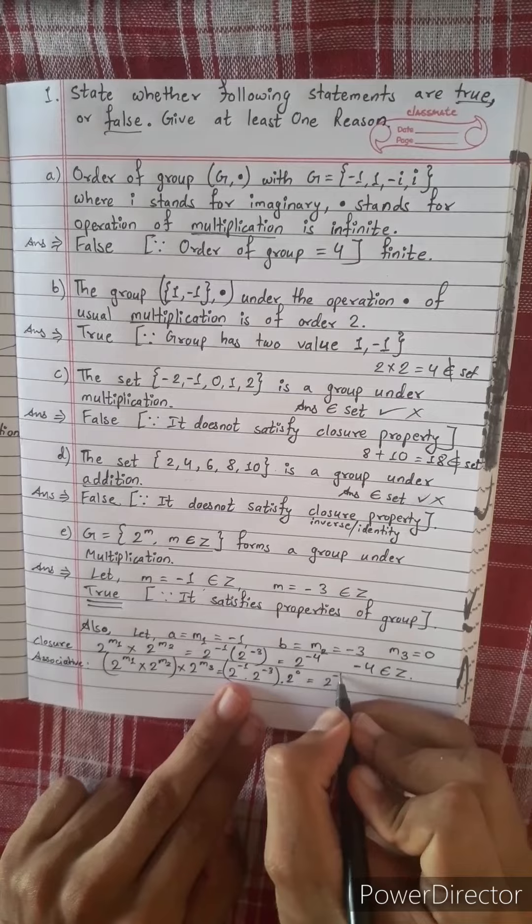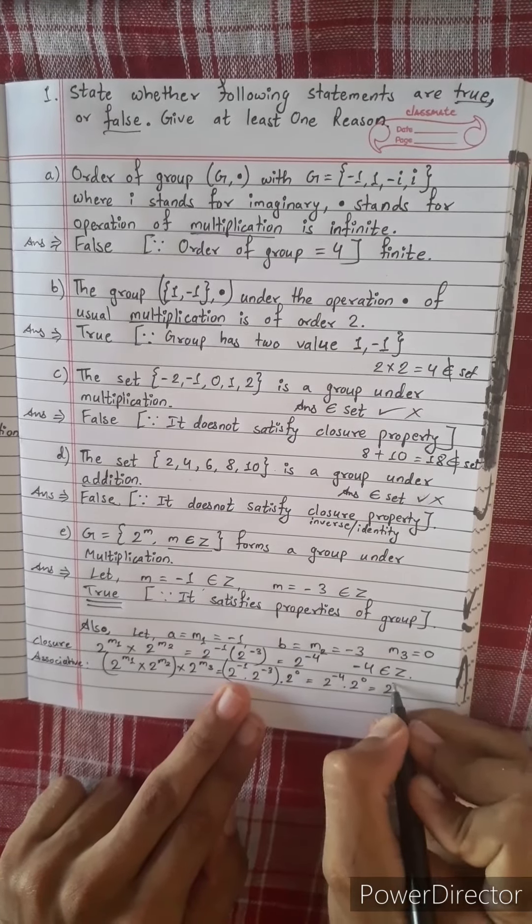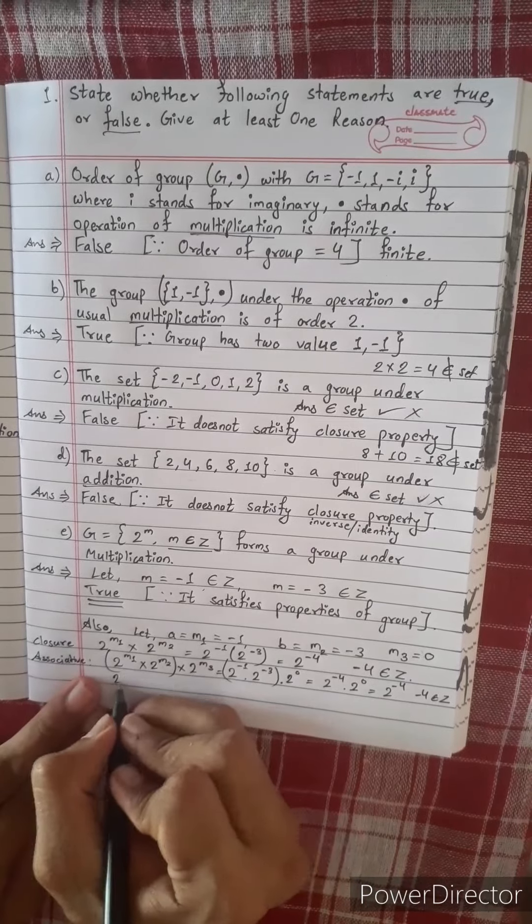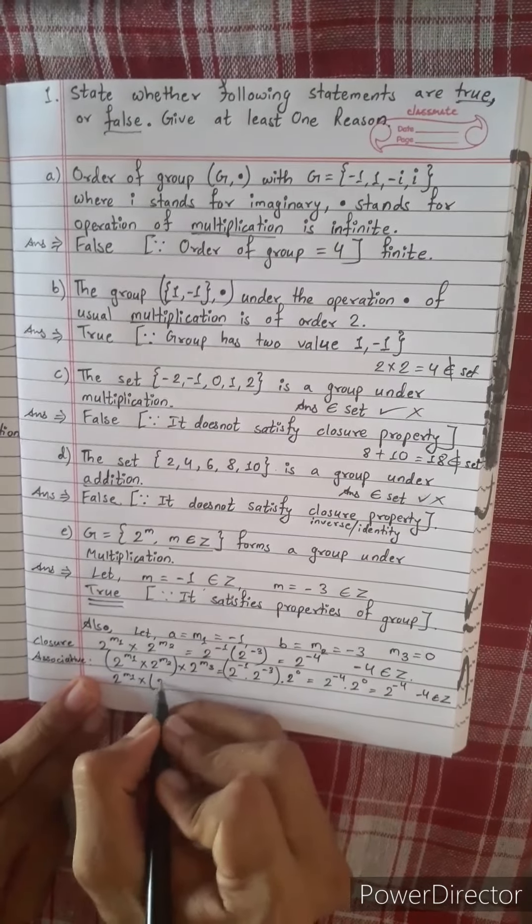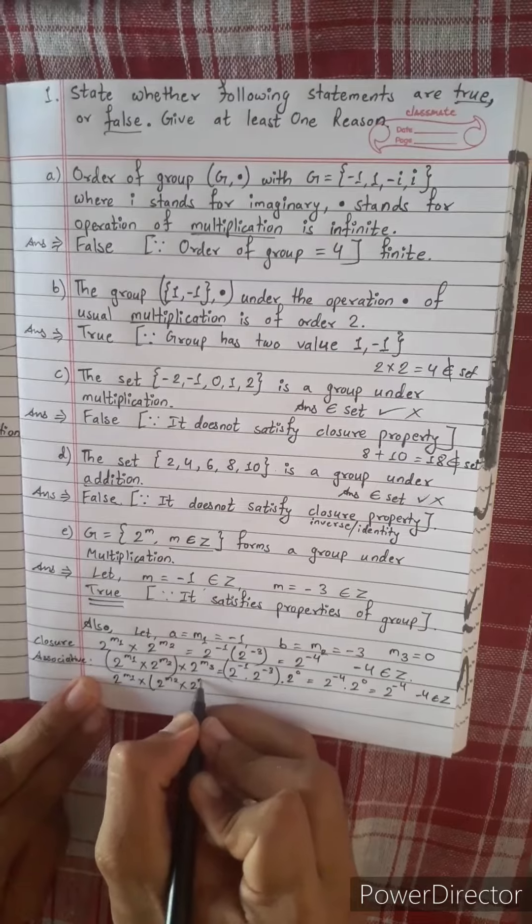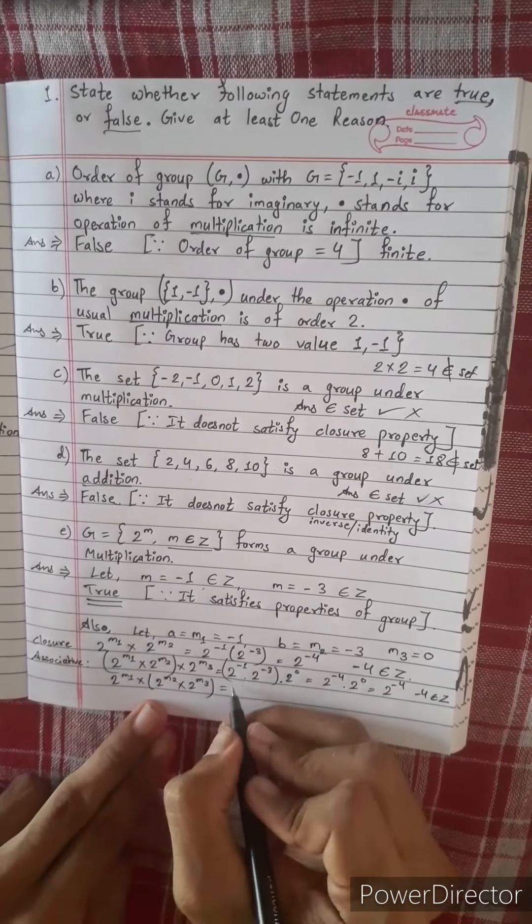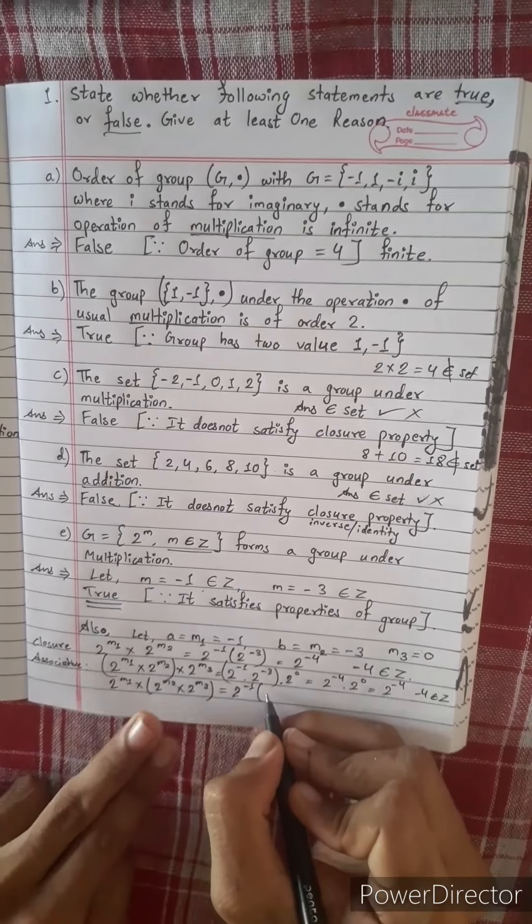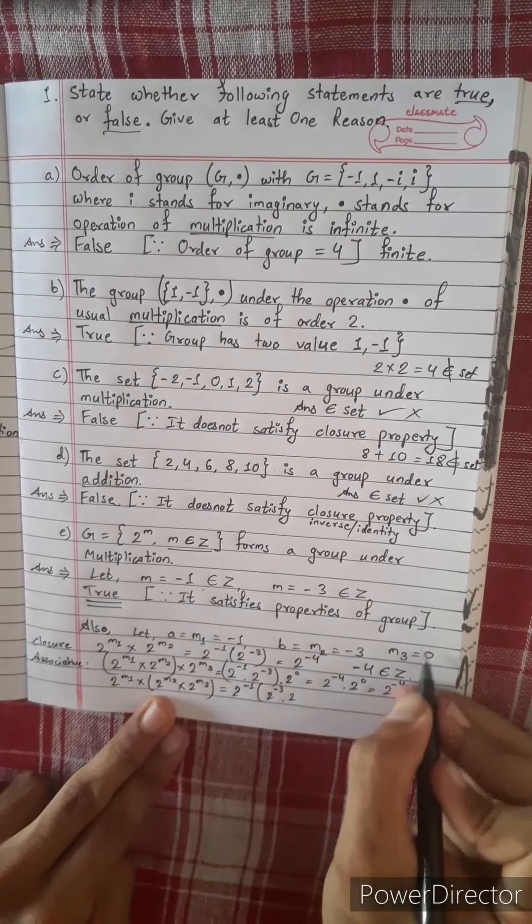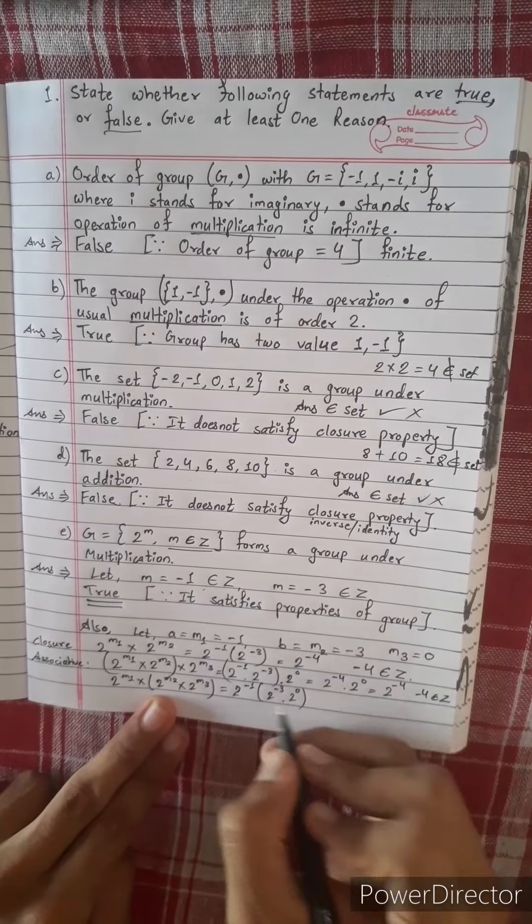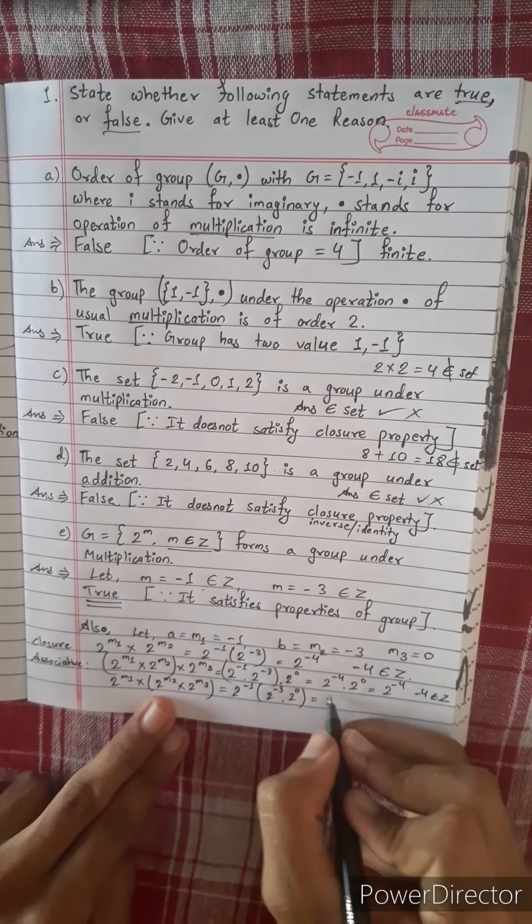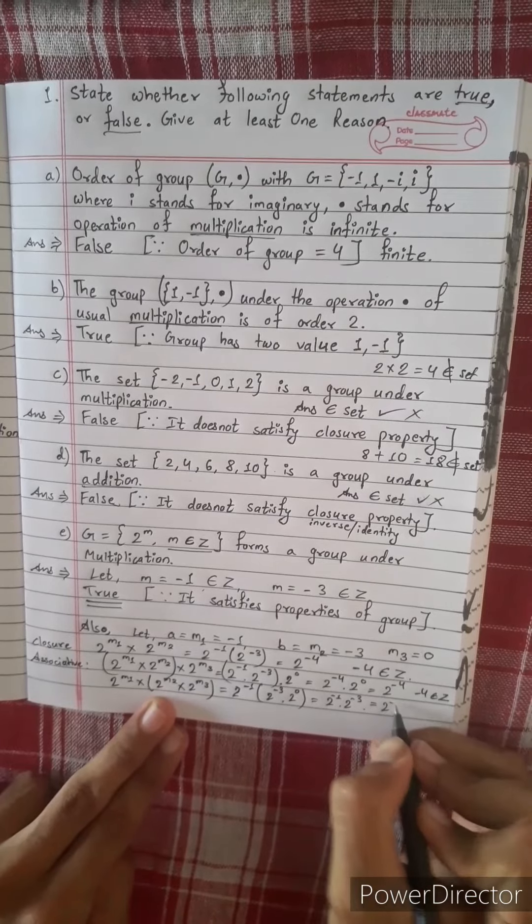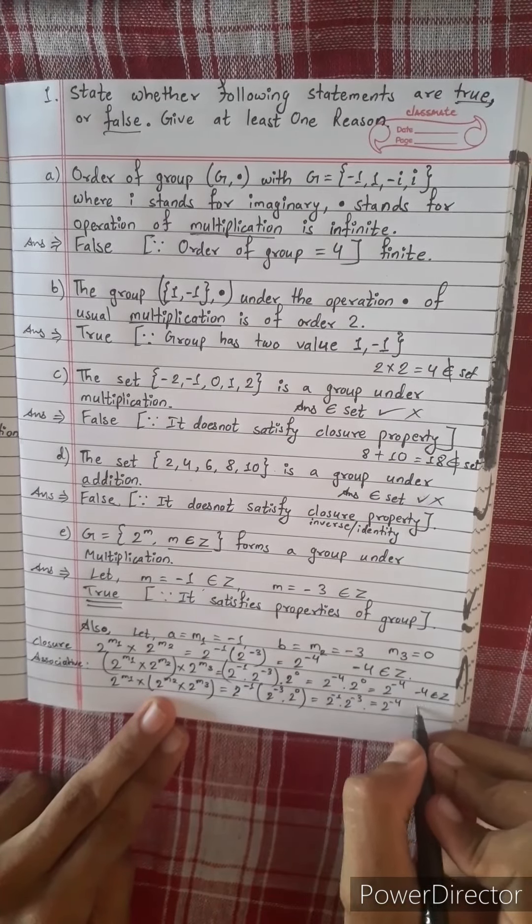1 times 2 power minus 4 multiply 2 power 0. 2 power minus 4, now minus 4 belongs to integer. 2 power m2 multiply 2 power m3, 2 power m1 multiply m2. 2 power minus 3, 2 power 0, 1. 2 power minus 1 multiply 2 power minus 3, 2 power minus 4 equal.